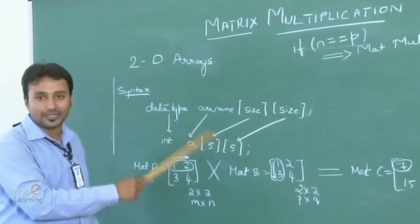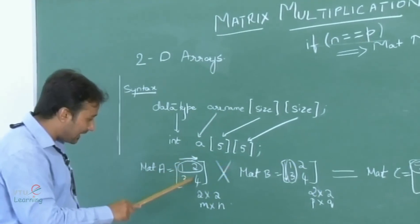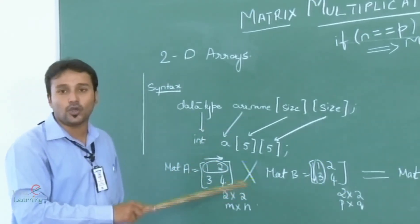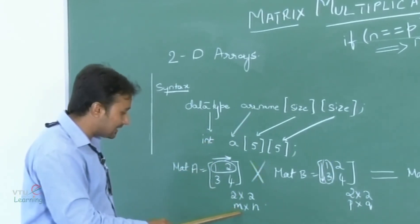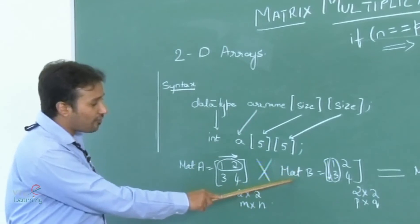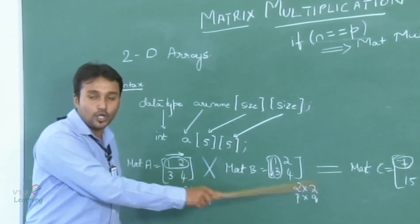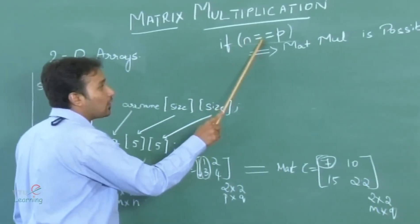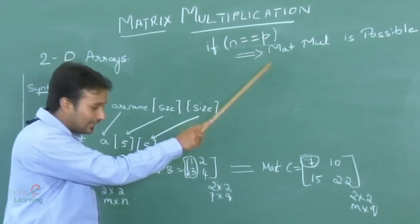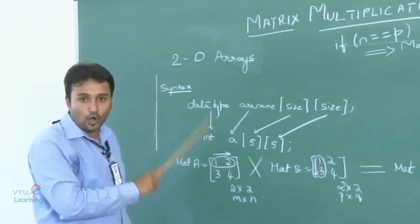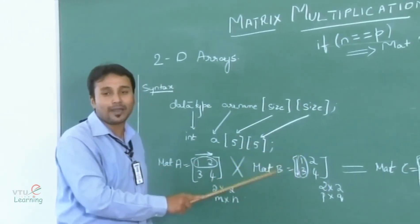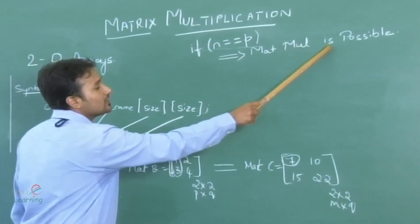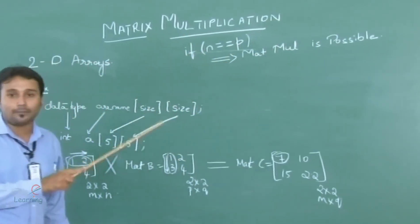Before actually multiplying, let us check how exactly to multiply. Since matrix A and matrix B are element by element representations, we need to perform the multiplication also element by element. The order of matrix A is M cross N and the order of matrix B is P cross Q. Two matrices are said to be multiplication compatible if and only if N equals P — that is, the total number of columns in matrix A must always be equal to the total number of rows in matrix B.